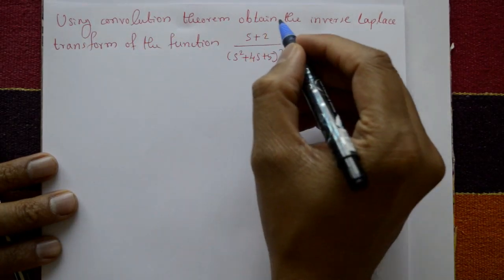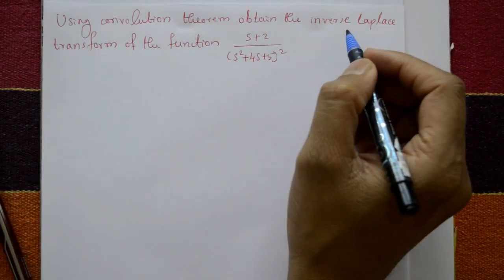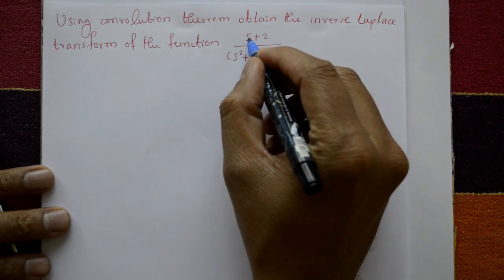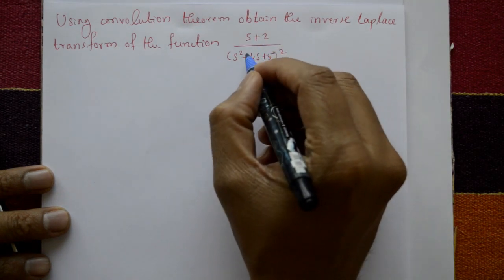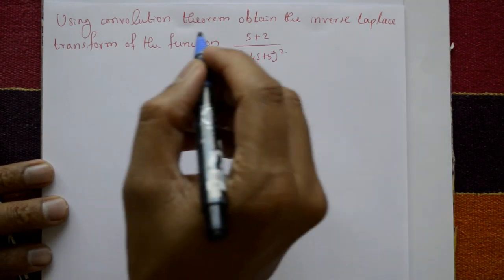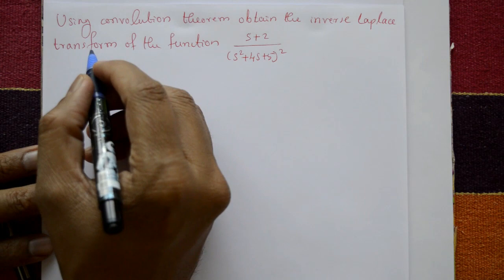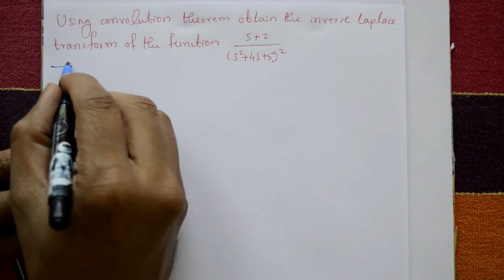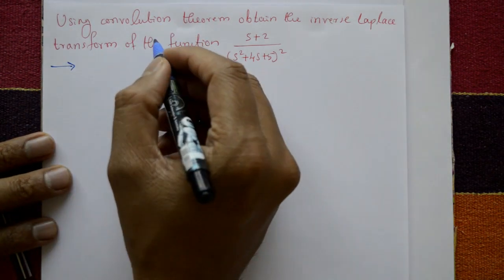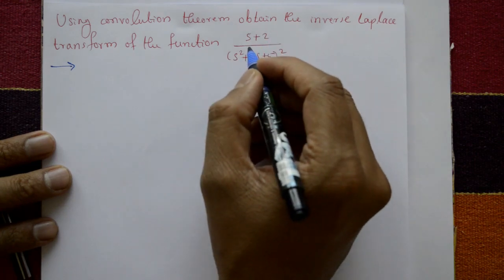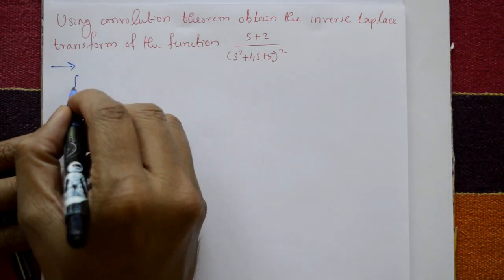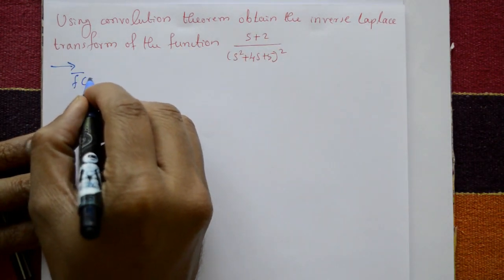Using the convolution theorem, obtain the inverse Laplace transform of the function (s + 2) / (s² + 4s + 5)². Solution: using the convolution theorem, find the inverse Laplace transform.